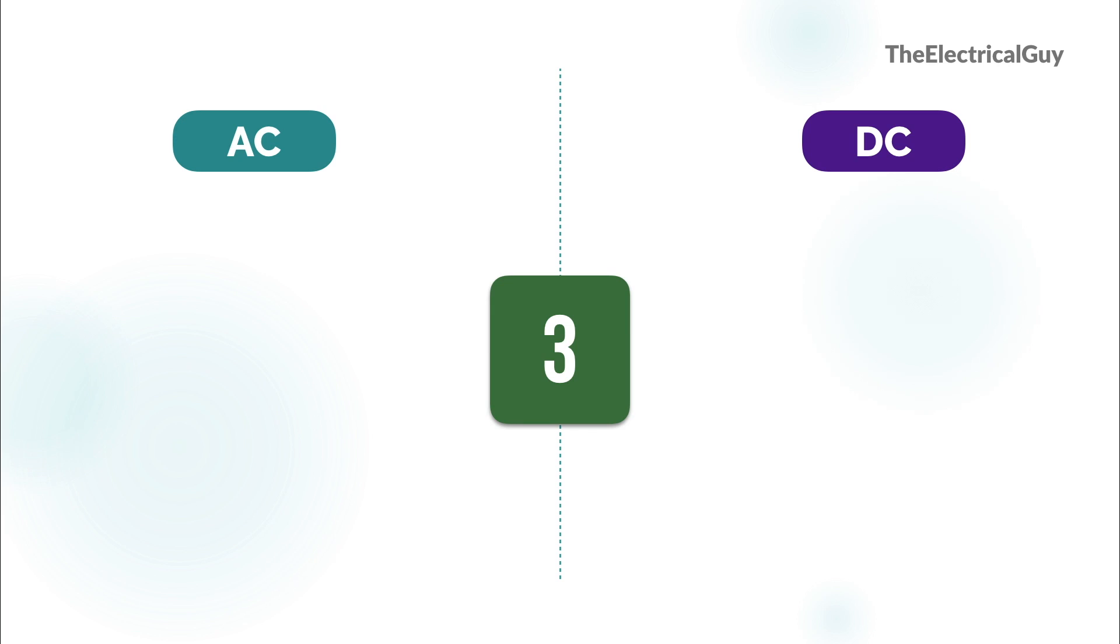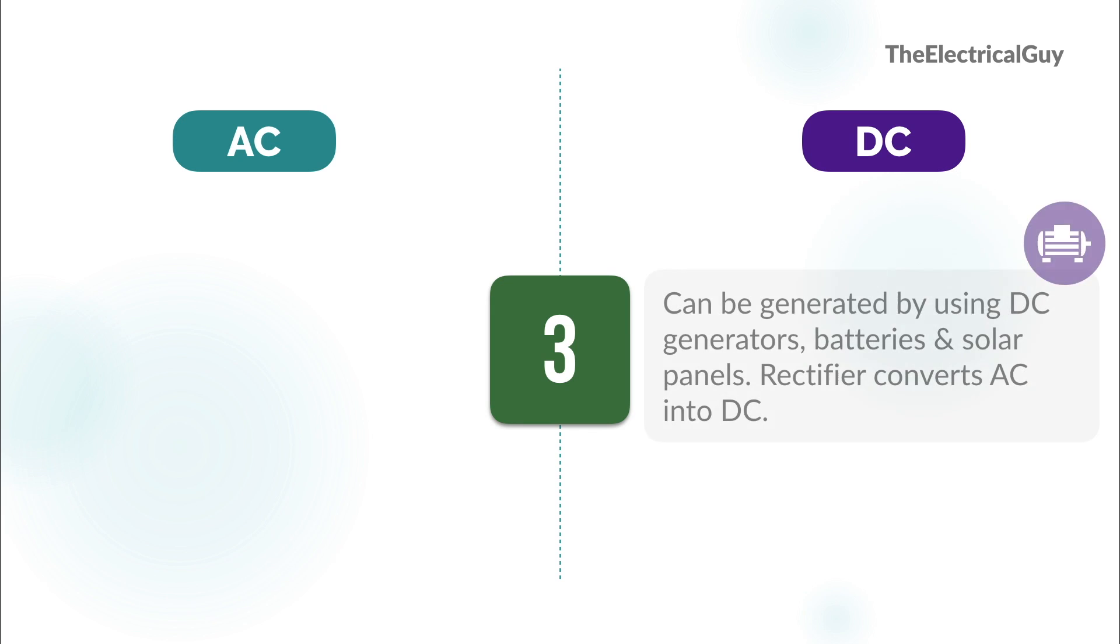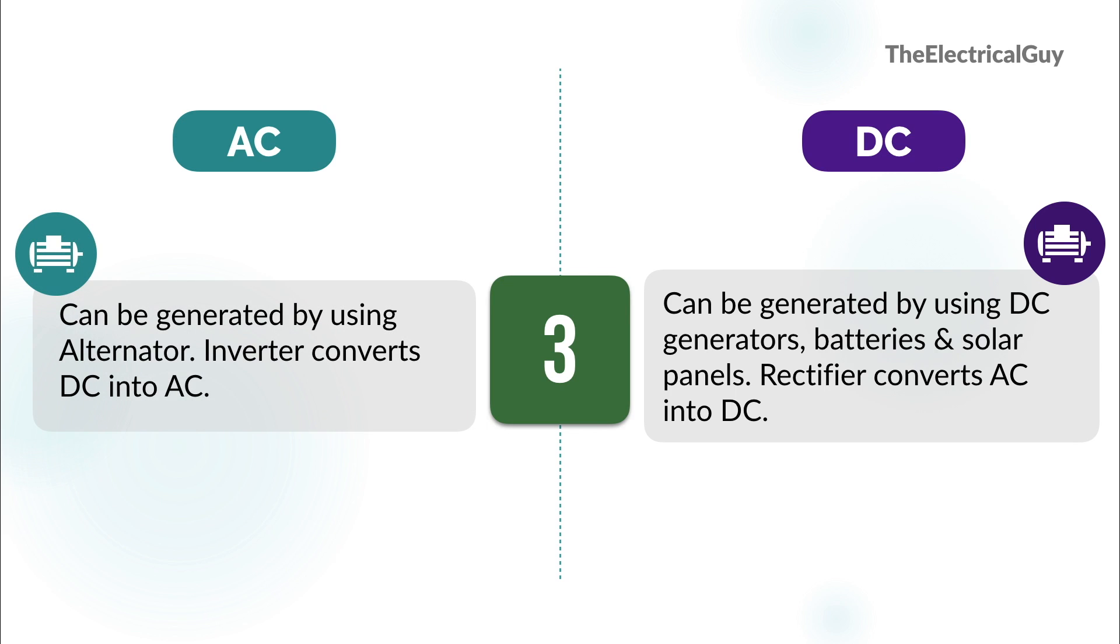Third point is we can generate DC by using DC generators, batteries, and solar panels. Also rectifiers convert AC into DC. To produce AC we need to use alternators. Also inverters can convert stored DC into AC.